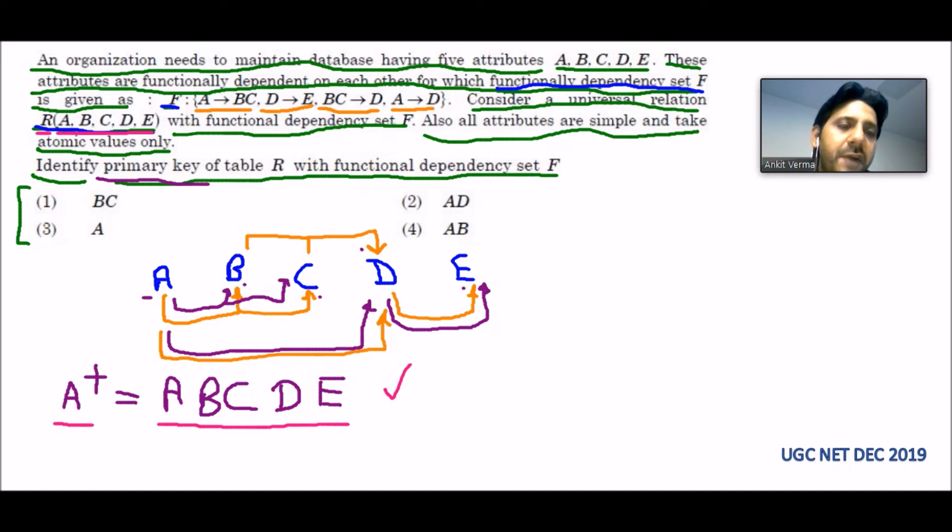Out of candidate keys we find the primary key. There is only one candidate key, so A will be the primary key that we will opt. So the correct answer for this question is third.